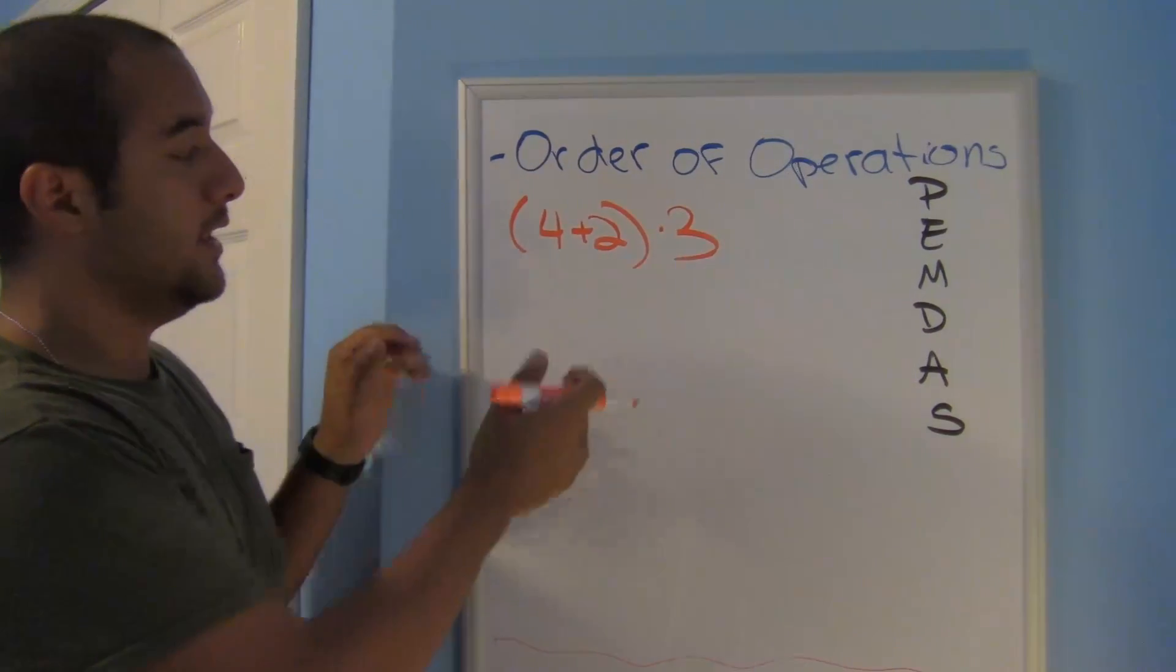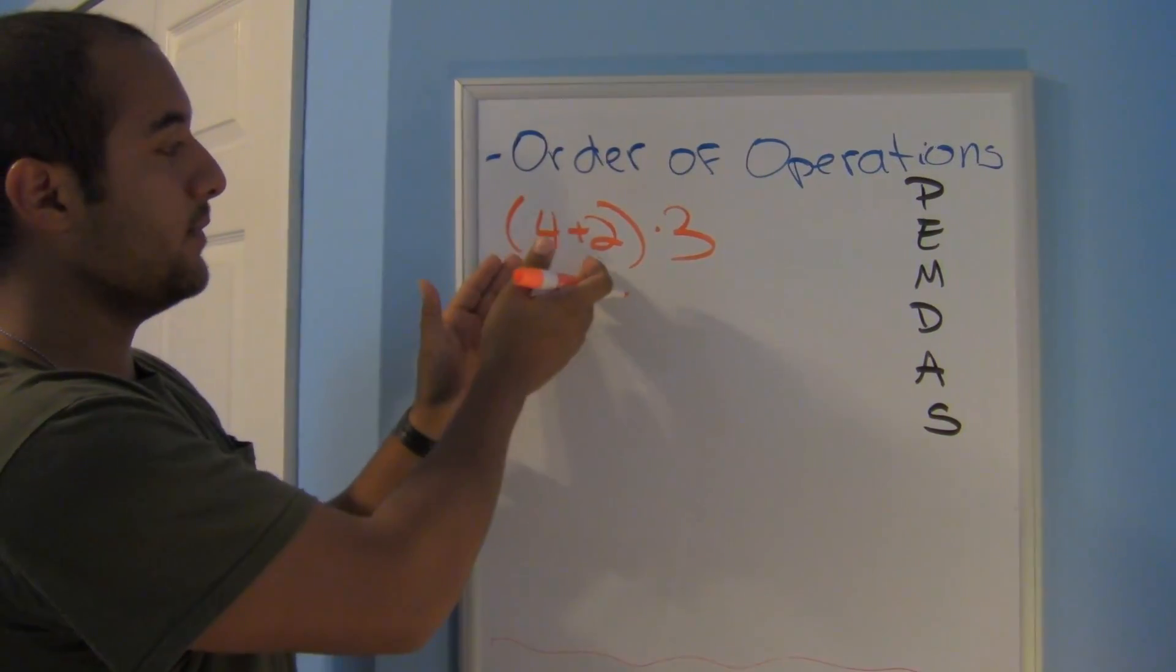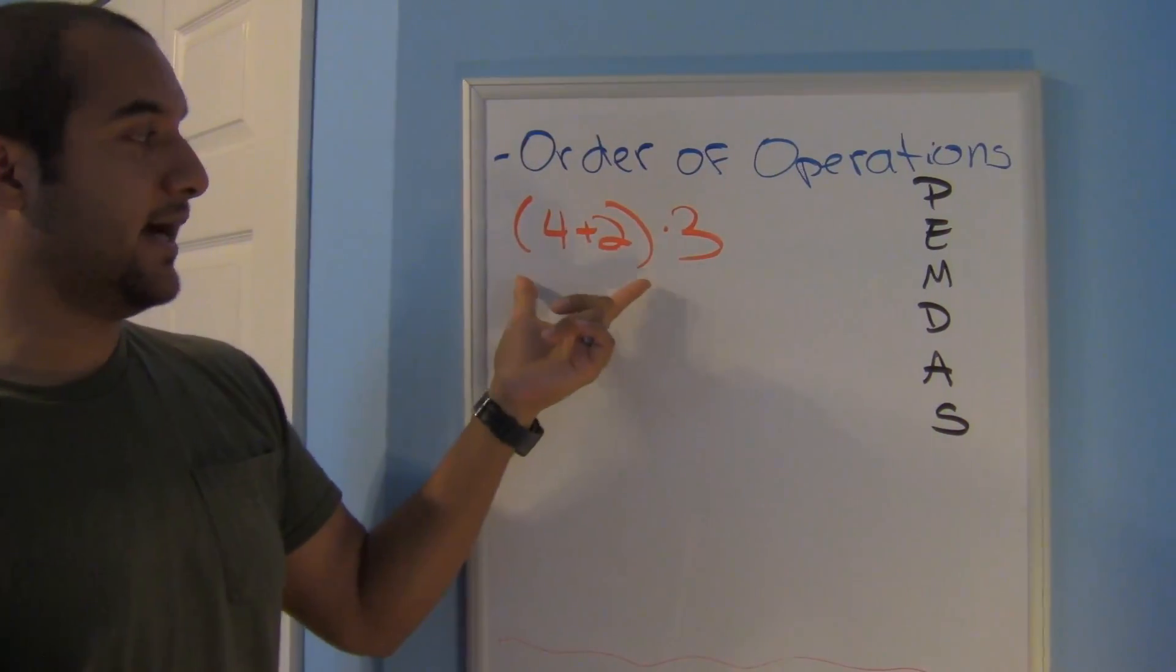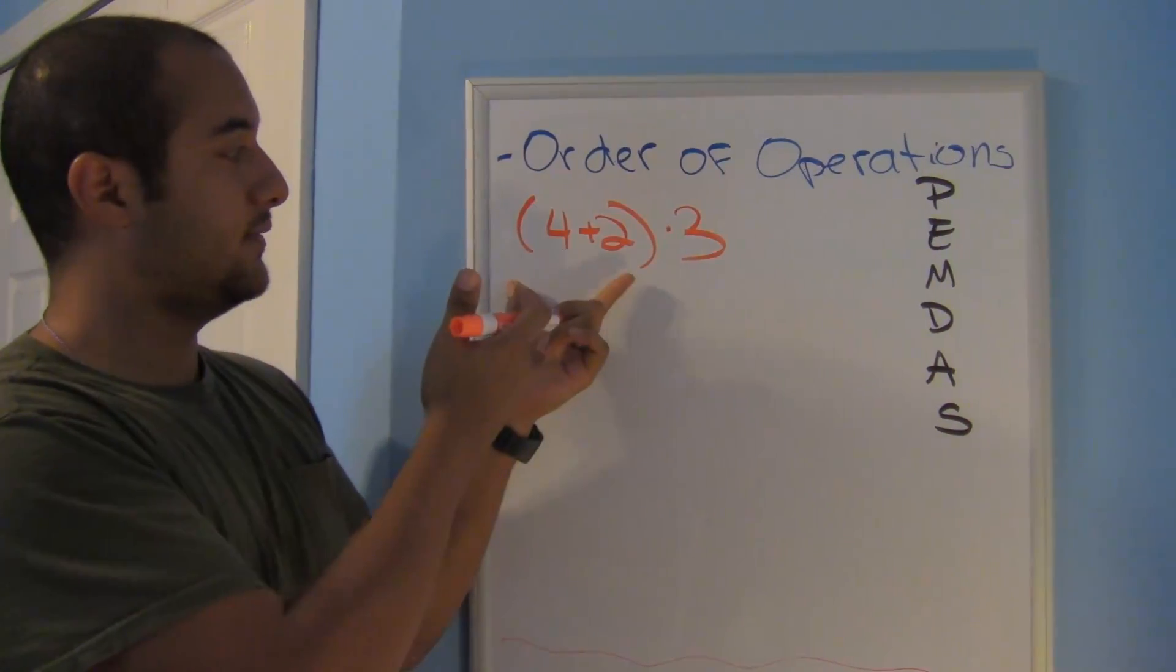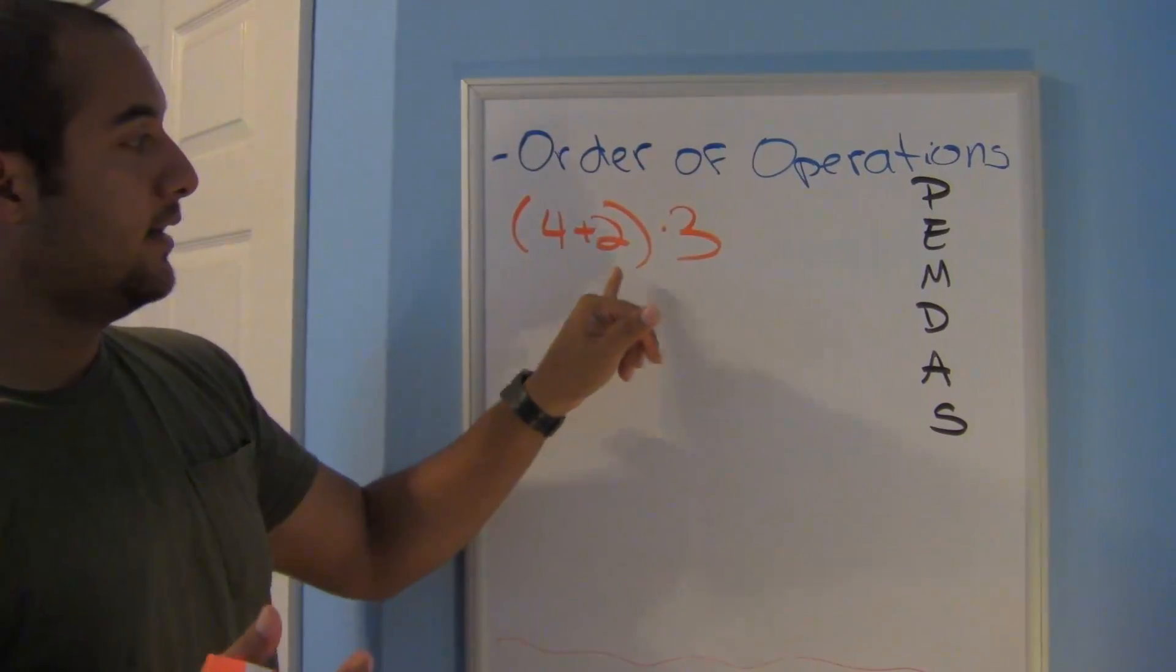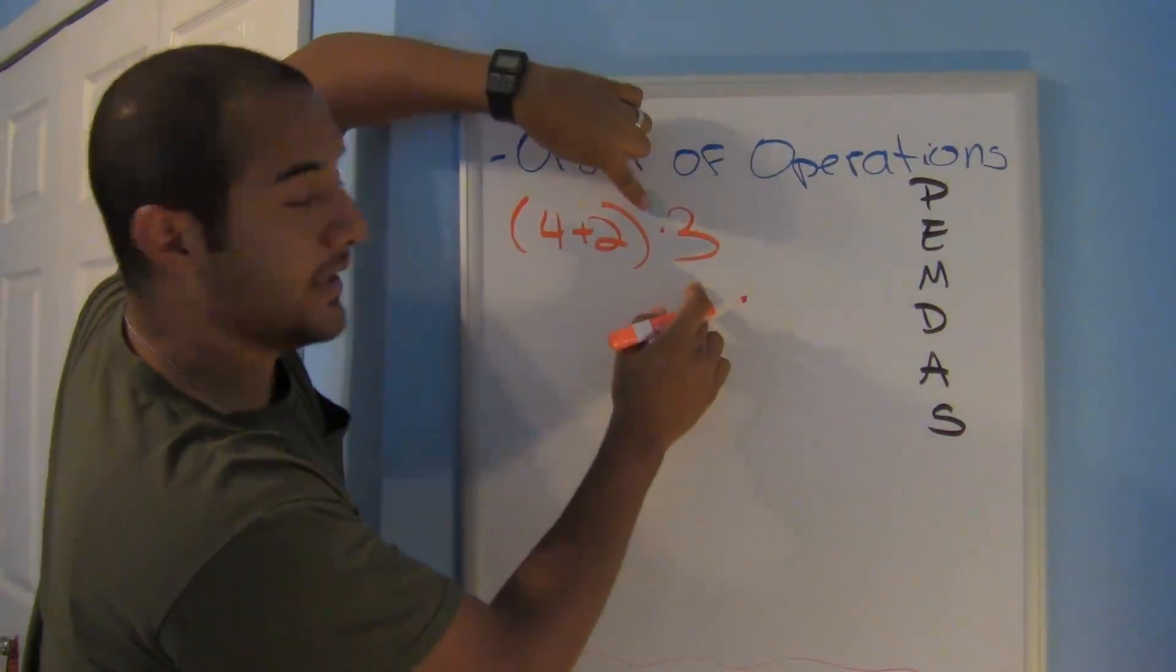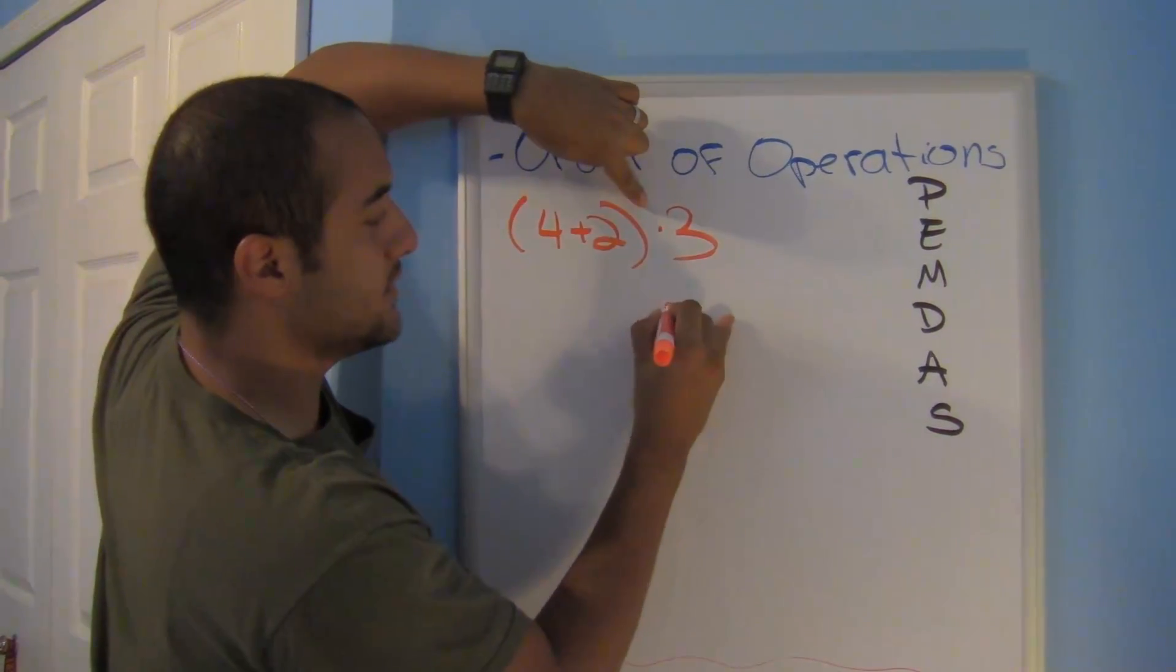All right. What about here? Here I do have a parentheses. It says 4 plus 2 times 3. Now with that parentheses though, this is telling me that I have to do whatever's in here first. In that case, I don't even have to worry about what's on the outside of the parentheses. So what's on the outside, I'm going to go ahead and bring down. So times 3.